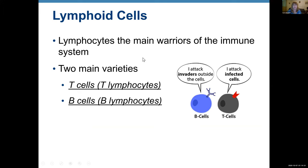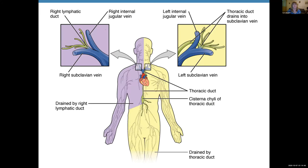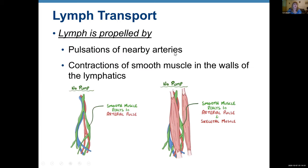So those were the different lymphatic vessels — starting with small capillaries that get bigger and bigger in diameter, until we have the two ducts: the right lymphatic duct and the thoracic duct.